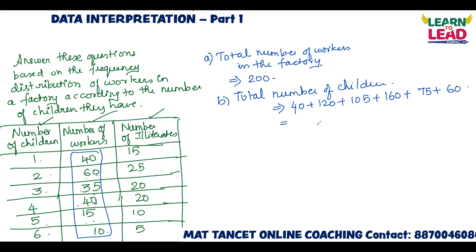Adding all the values: 40 plus 60 is 100. 100 plus 120 is 220. 220 plus 105 is 325. 325 plus 75 is 400. 400 plus 160 gives 560. So 560 is the answer. This is how you do the fast calculation.